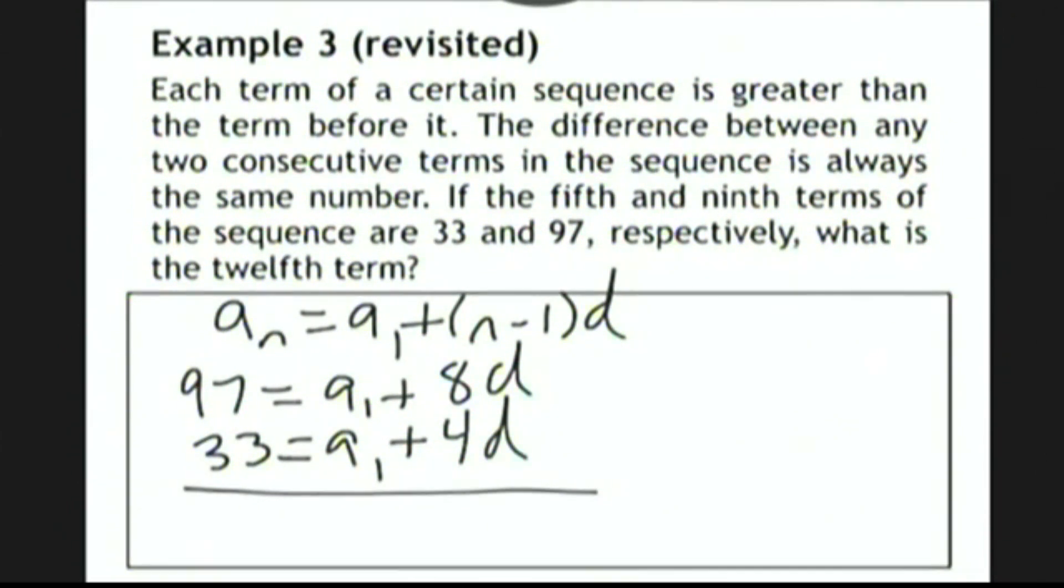97 minus 33 is 64. When we subtract the a_1's, they cancel, and 8d minus 4d is 4d. Finally, we divide each side of this last equation by 4 to get that d is 16 as before.